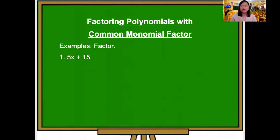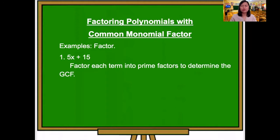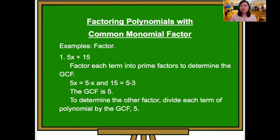Number one: factor 5x plus 15. Factor each term into prime factors to determine the greatest common factor. For the first term, 5x, we have 5 times x. For the second term, 15, we have 5 times 3. The greatest common factor is 5.